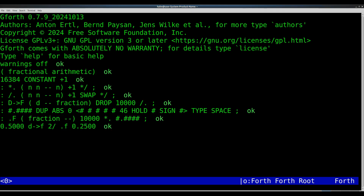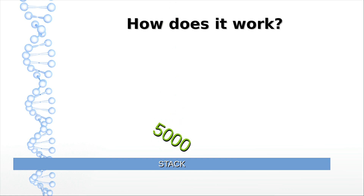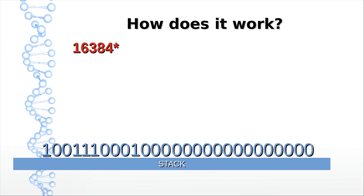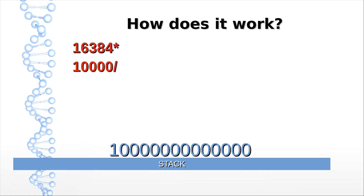How does this work? We've thrown 5,000 decimal on the stack. Now let's convert that to binary. Then we multiply it by 16,384 decimal, which is equivalent to left shift 14. Finally, we divide it by 10,000 decimal. Note that we started by multiplying it by that number. What we actually did was create 14 decimal places in binary — in other words, we shifted the binary dot 14 places to the left.